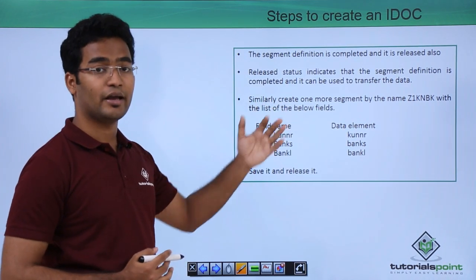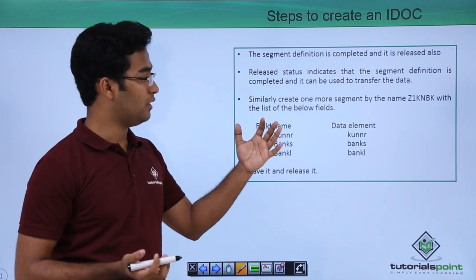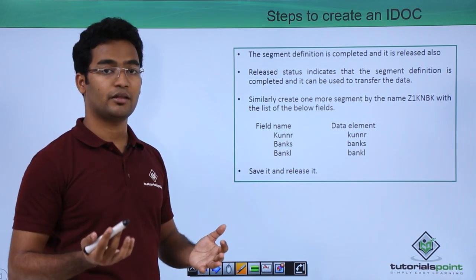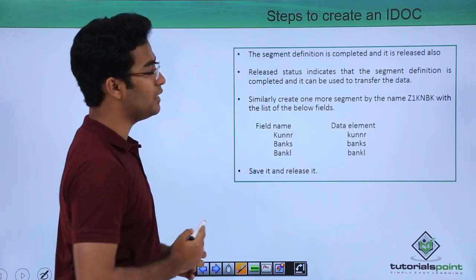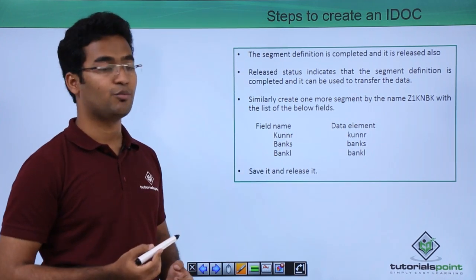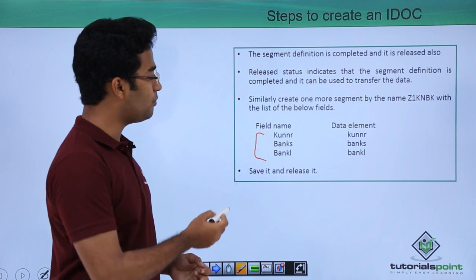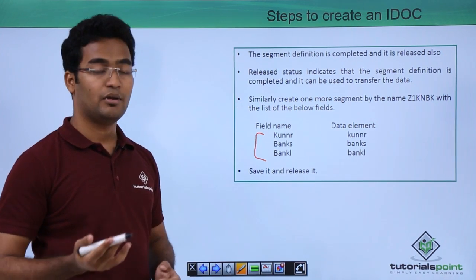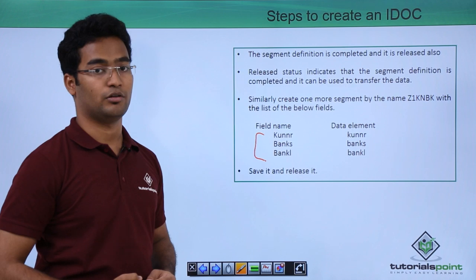So till here we have completed one of the segments. We will also be creating our second segment, which would be named Z1KNBK. All the similar steps we have to follow, and the fields would be KUNNR, BANKS, and BANKL. Similarly, we have to save it and release it also.